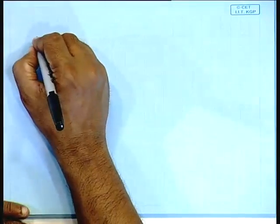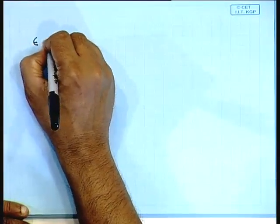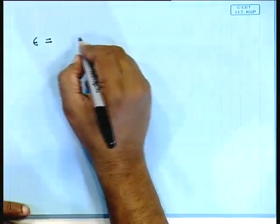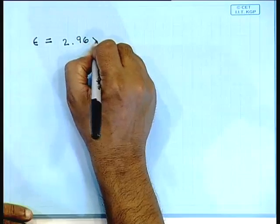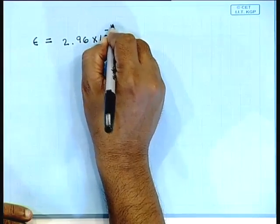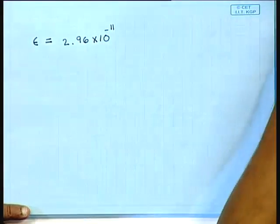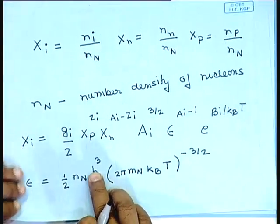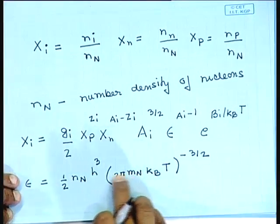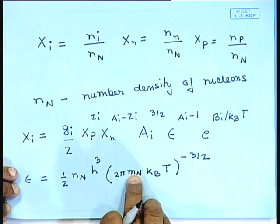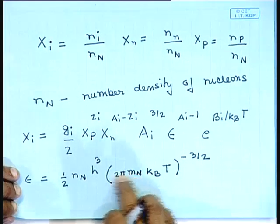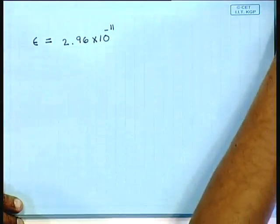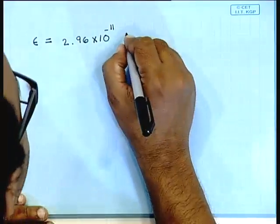Epsilon can also be written numerically as 2.96 × 10^{-11} times various factors. Putting in the values of Planck's constant, the nucleon mass (proton and neutron masses are approximately the same), and the Boltzmann constant, one obtains these numerical results.